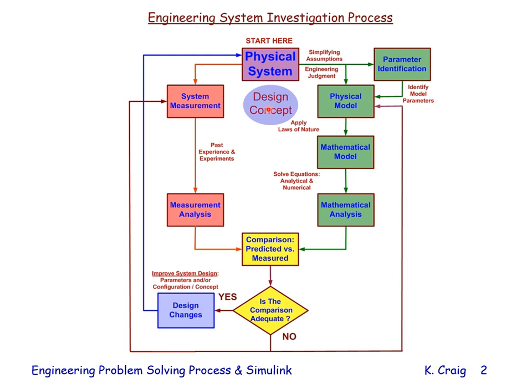The first step in the process is to create a physical model of the physical system or the design concept. This is done by using engineering judgment and making simplifying assumptions. There is a hierarchy of physical models possible from the less real, less complex, to the more real, more complex. The key is to create a physical model that captures the essential attributes of the physical system or the design concept and gives the greatest insight. Modeling is all about insight.